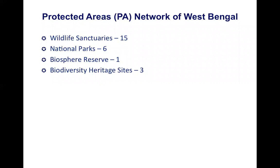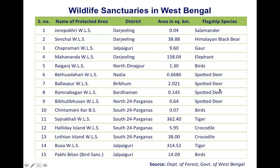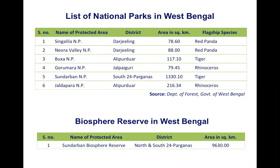Among the 15 wildlife sanctuaries, Jorepokhri is the smallest, famous for the Himalayan salamander or Tylototriton, and the largest is the Senchal Wildlife Sanctuary, whose passive species is the tiger. There are six national parks; the only one located in the southernmost part of West Bengal is Sundarbans National Park, which is predominantly a mangrove forest. The others — Singalila, Neora Valley, Buxa, Jaldapara, and Gorumara — are all in the northernmost part of West Bengal.